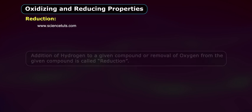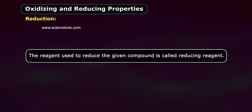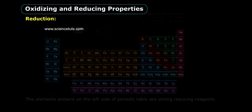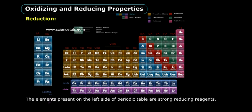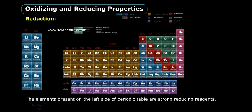Reduction is the addition of hydrogen to a given compound, or the removal of oxygen from a given compound. The reagent used to reduce a given compound is called a reducing reagent. The elements present on the left side of the periodic table are strong reducing reagents.